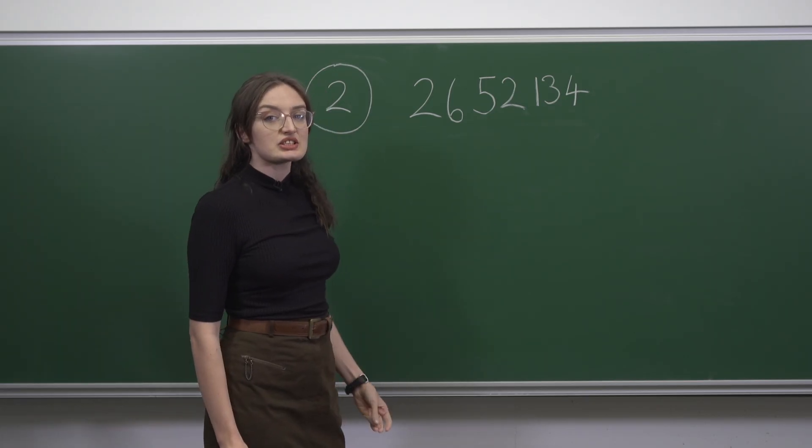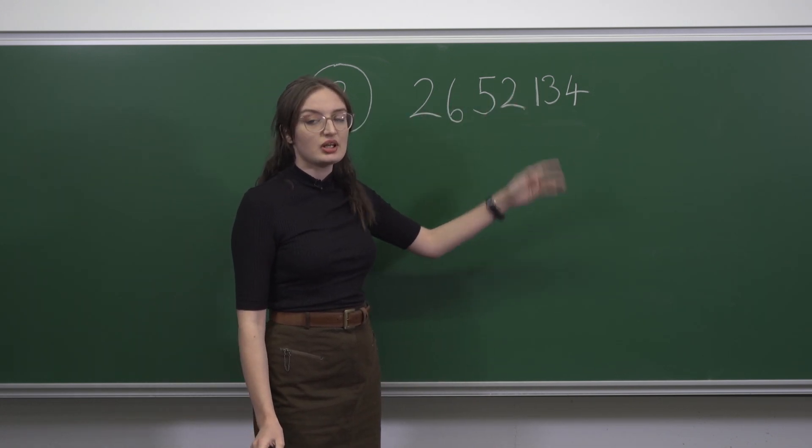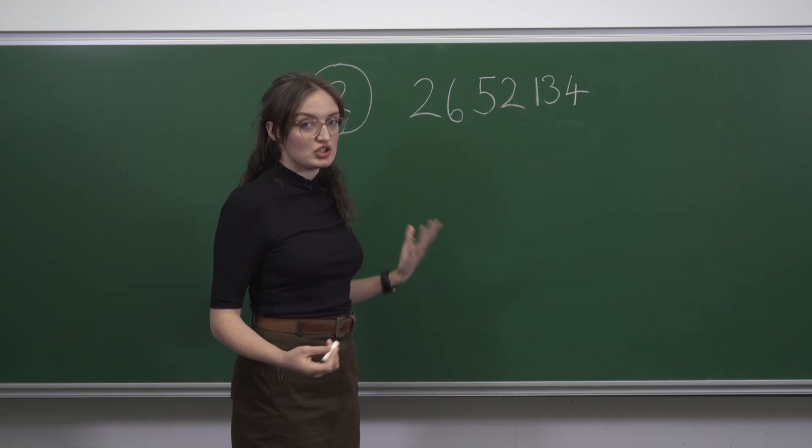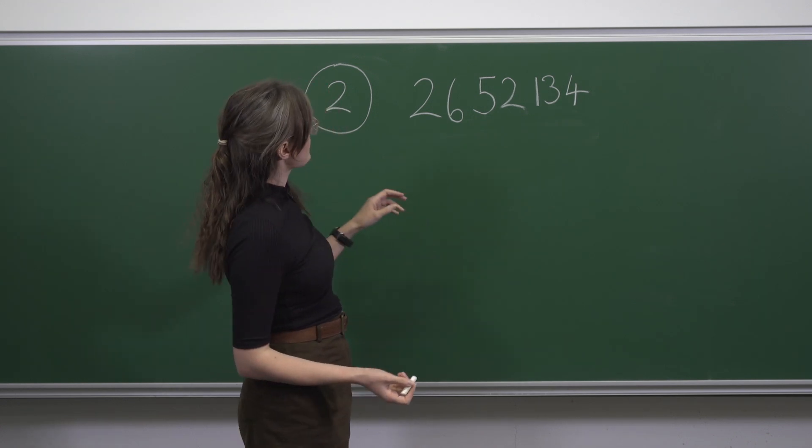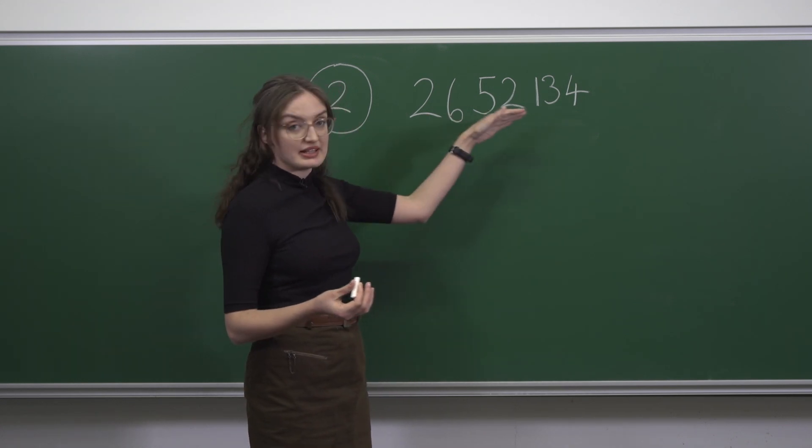In this question we're asked what the remainder is when this large number is divided by 13. Now division by 13 usually isn't very easy, but we can immediately start noticing some multiples of 13 in this number.